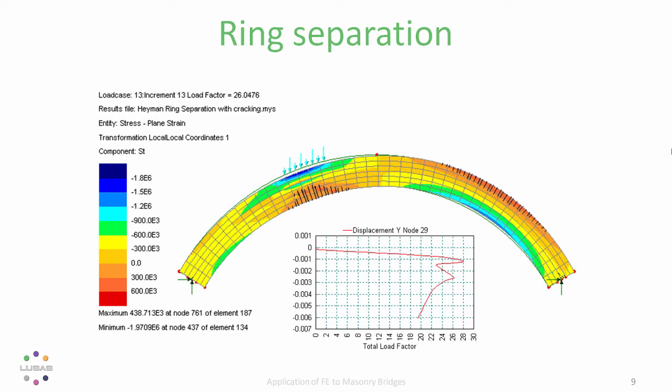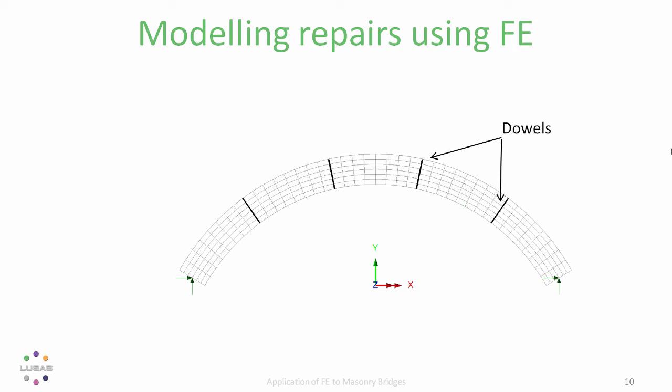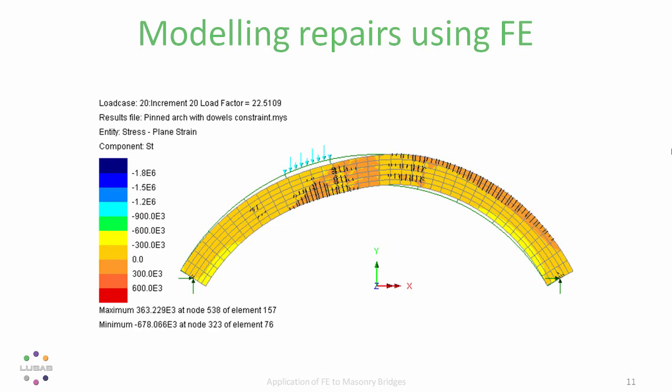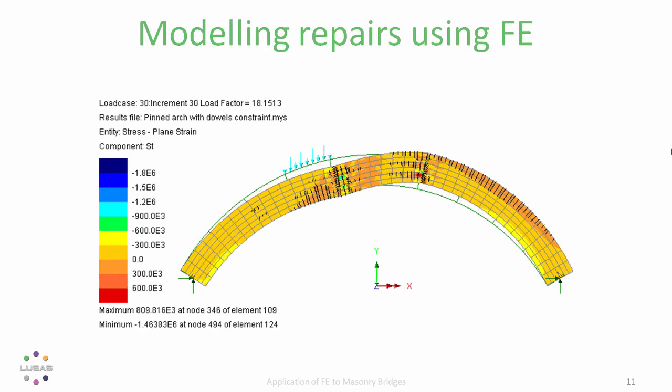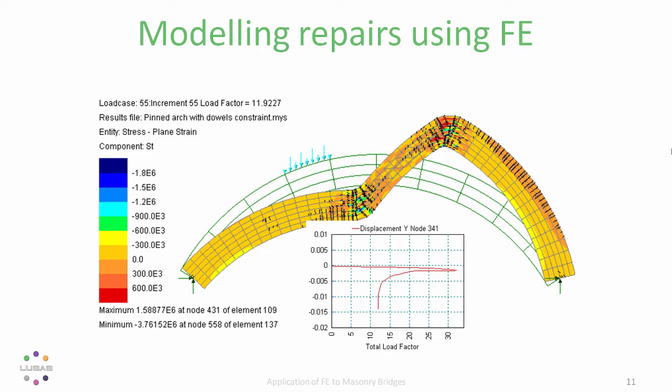One of the beauties of FE is the flexibility to modify the model to simulate potential modifications to the real structure. In this example, dowels are simulated. Stainless bars of 20mm diameter at 300 spacing into the screen and at the four locations indicated. The intention is to resist ring separation. And indeed, the analysis shows that inserting such dowels increases the failure load from 28 tonnes up to 32 tonnes, closer to the original capacity where ring separation was ignored.